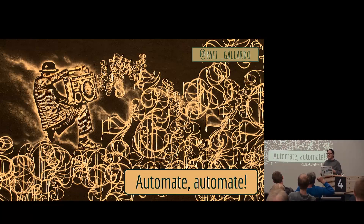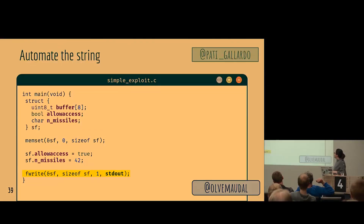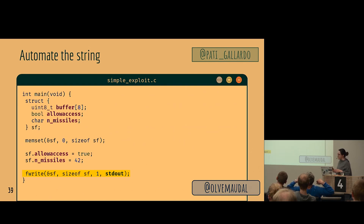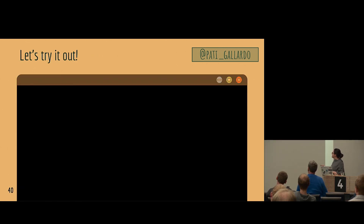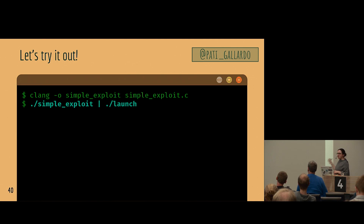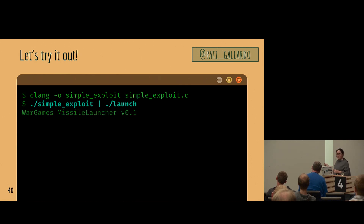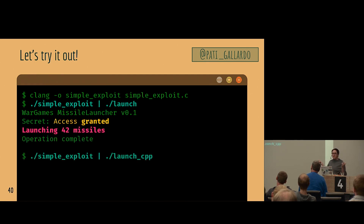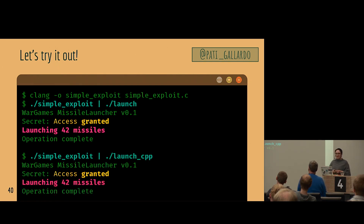To make it look cooler, we automate this. We write a little C program that builds the struct of what's on the stack, sets the values, and writes that to stdout. Then we pipe it straight into our program — and that looks pretty cool. Piping our exploit into the program makes it look like we know what we're doing. Access granted, launching 42 missiles, operation complete. And it works on both C++ and C with the exact same exploit.